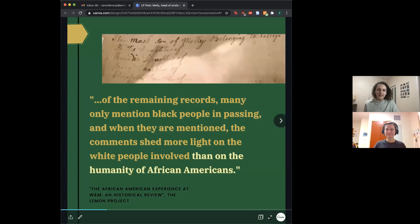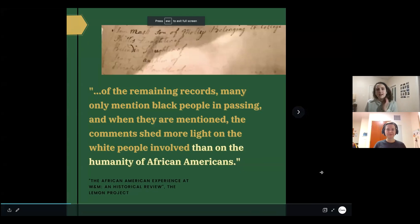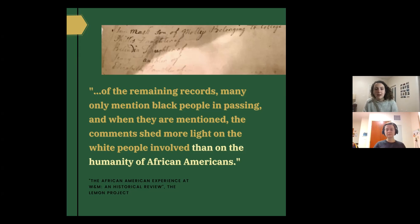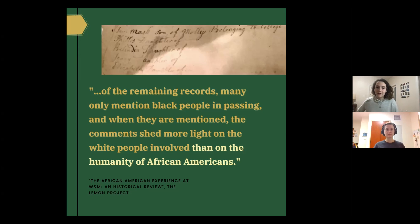I was looking at Molly, who was the head of an enslaved family belonging to the college. When doing biographical research, this was difficult because that's all we know — her name and that she was the head of an enslaved family at the college. I wanted to open with this line I found from the Lemon Project report: 'Of the remaining records, many only mention black people in passing, and when they are mentioned, the comments shed more light on the white people involved than on the humanity of African-Americans.' This really made me reflect on how little we know about the lives of early African-Americans and what that means for history and what we should be doing now.